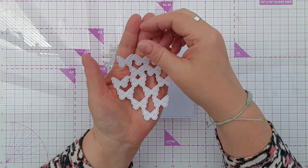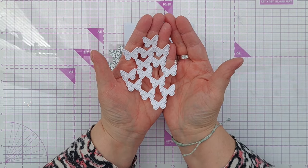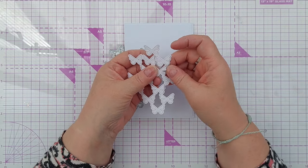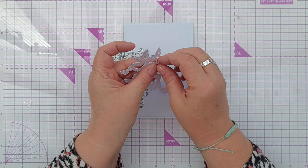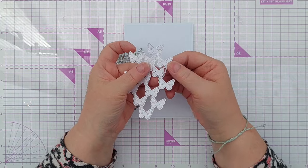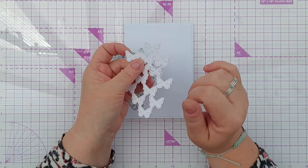This die cuts out this net shape here and the wings of each butterfly lift up like that so you can peek underneath.